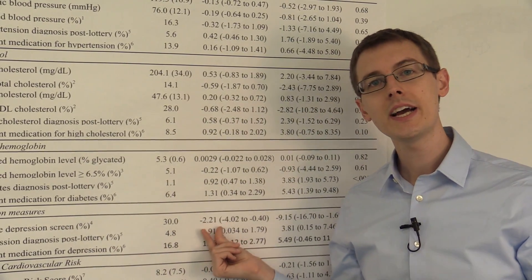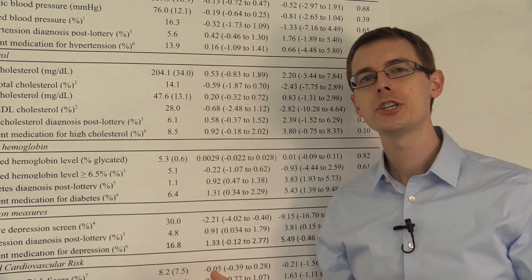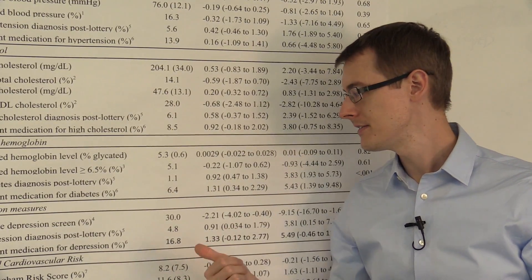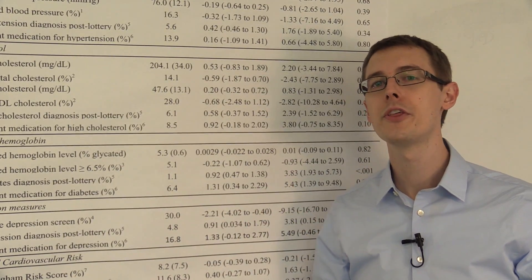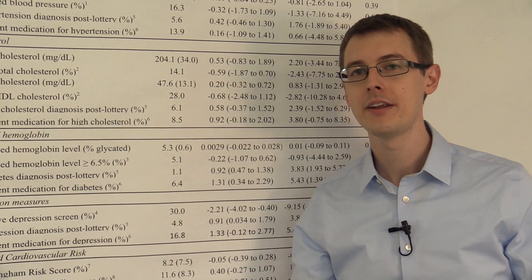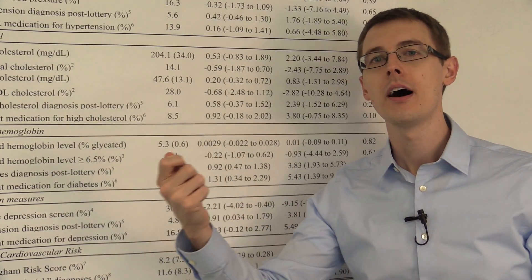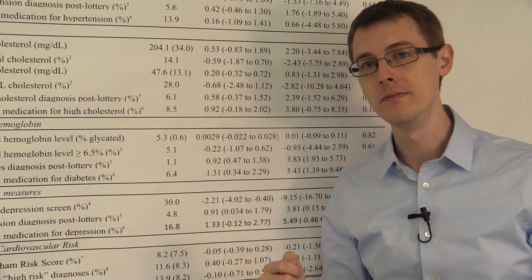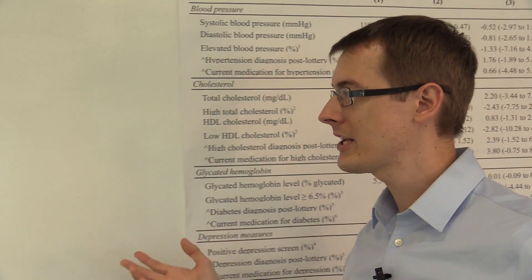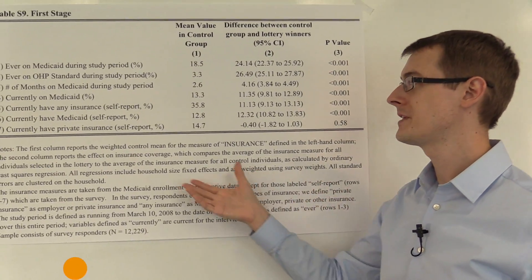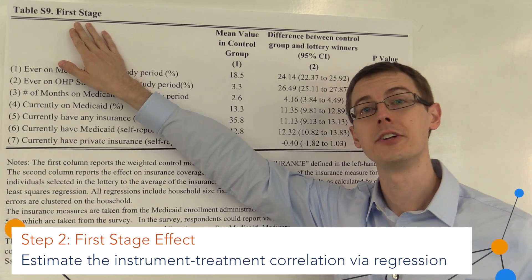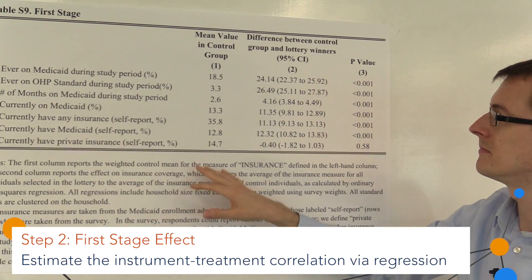Then in the second step, we look at the relationship between the instrument and the treatment. So whether you actually got treatment or not, and how does that compare to your outcome variable. That's called the first stage estimator. And that's shown in this table over here, table S9, the first stage. So this is our second step.